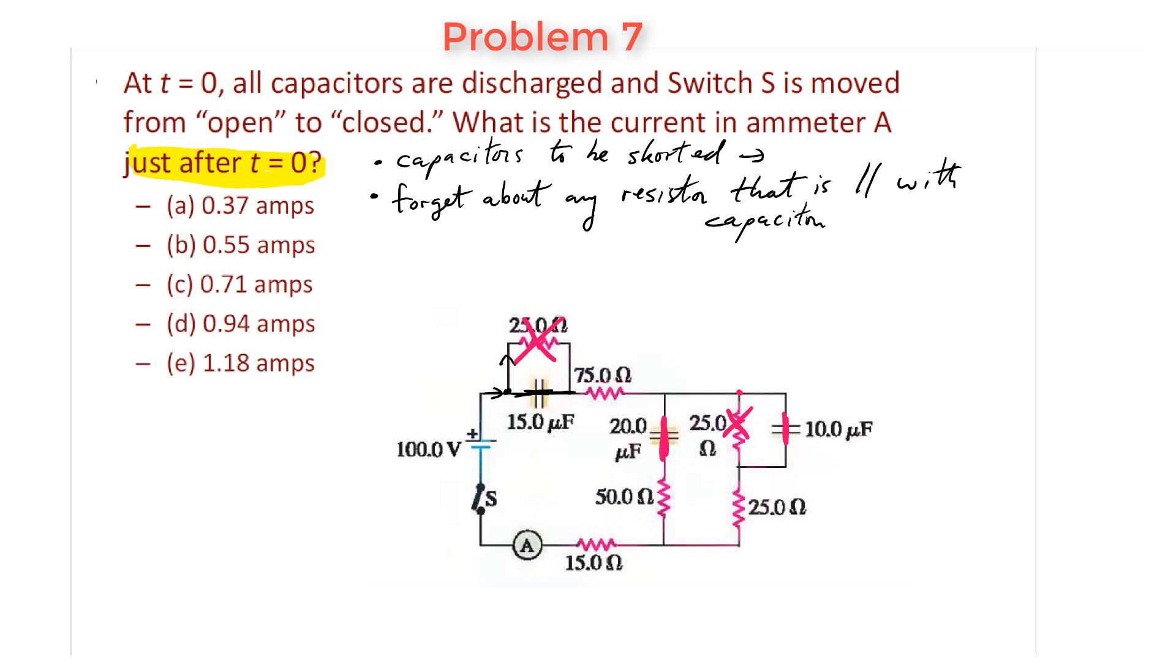So now this becomes very, very easy, right? Because if I consider this path now, I consider the shorted path through the 75 ohm resistor. I am now going to split up. I have some current that's going to go down over here. I also have some current that's going to flow down in this section. It's going to go down this way. Current's going to combine, and then eventually flow through this 15 ohm resistor.